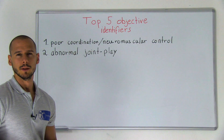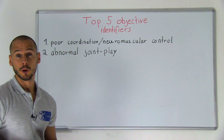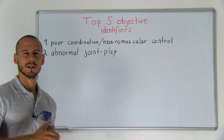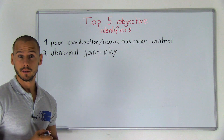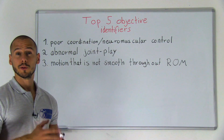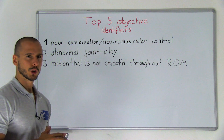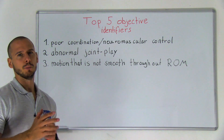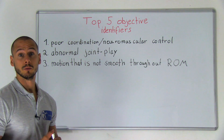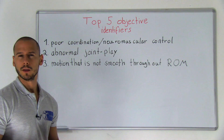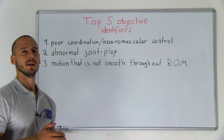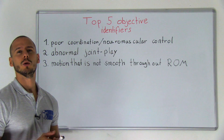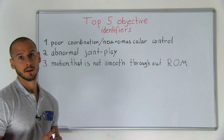Number two is abnormal joint play — thumbs up if you want a video on how to do that. Number three is motion that is not smooth throughout range of motion, including segmental hinging, pivoting, or fulcruming.